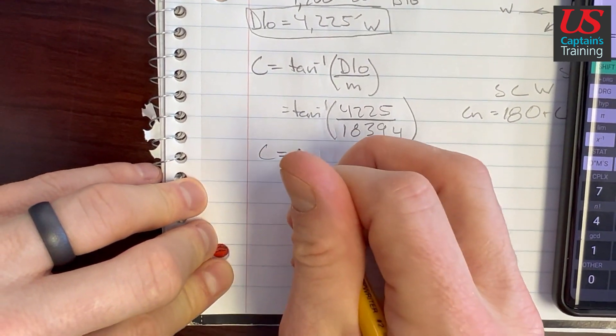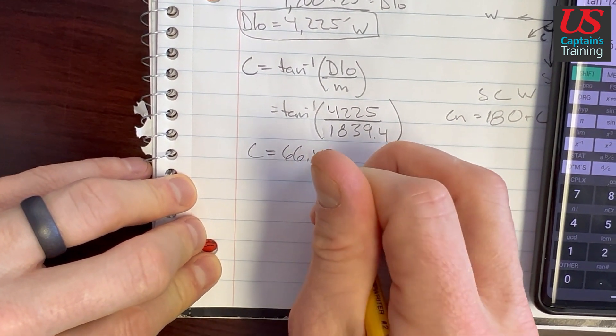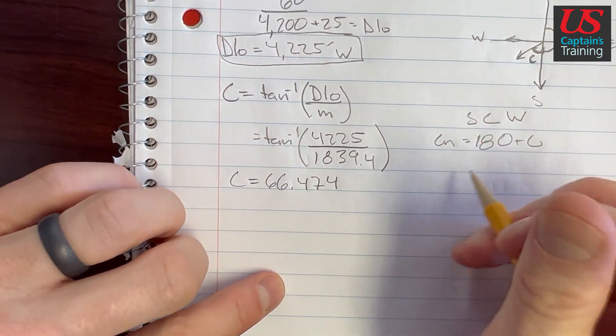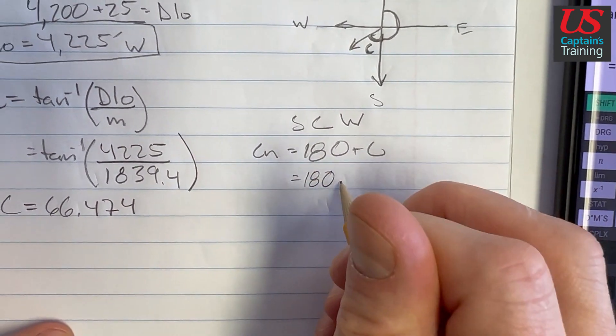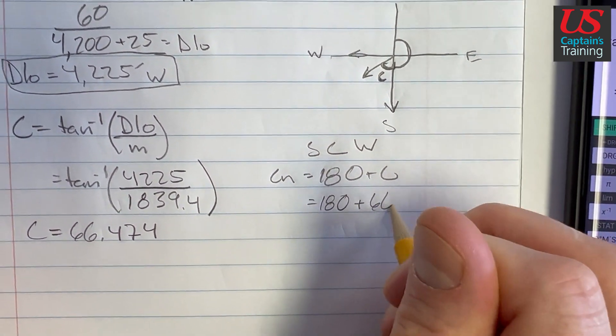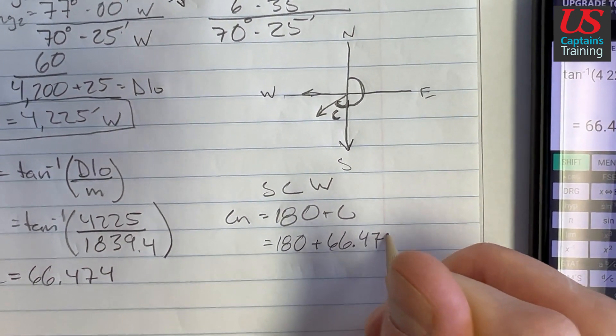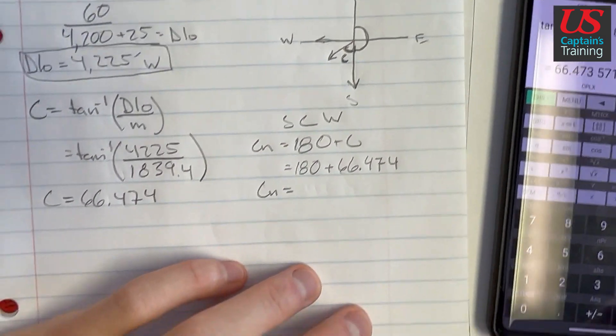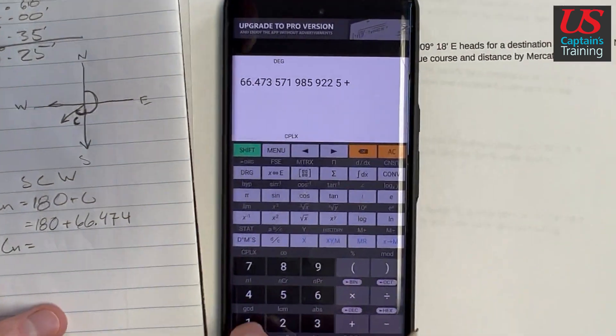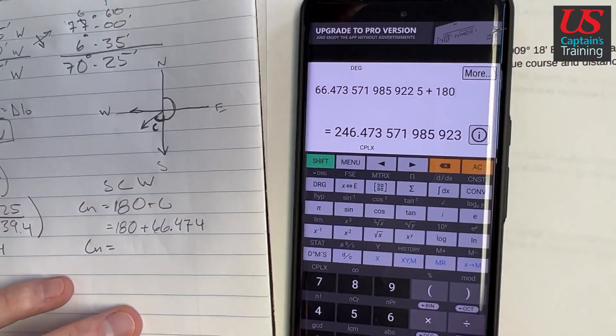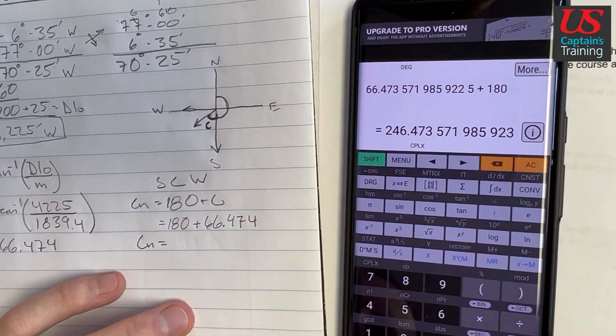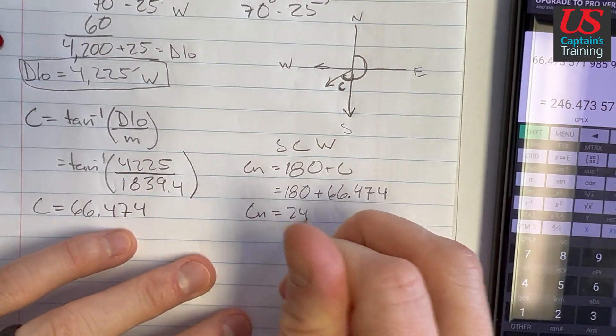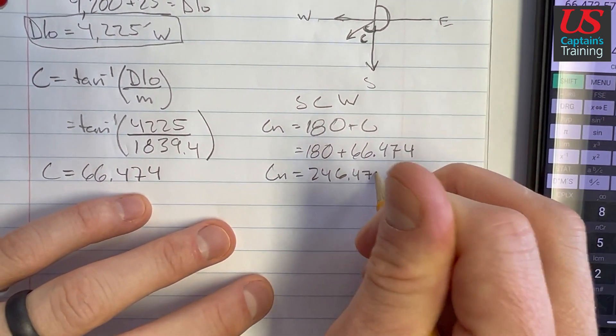Course equals 66.474. Now we can plug that course in here. So 180 plus 66.474, CN is equal to 246.474. This will be one of the answers we're looking for.